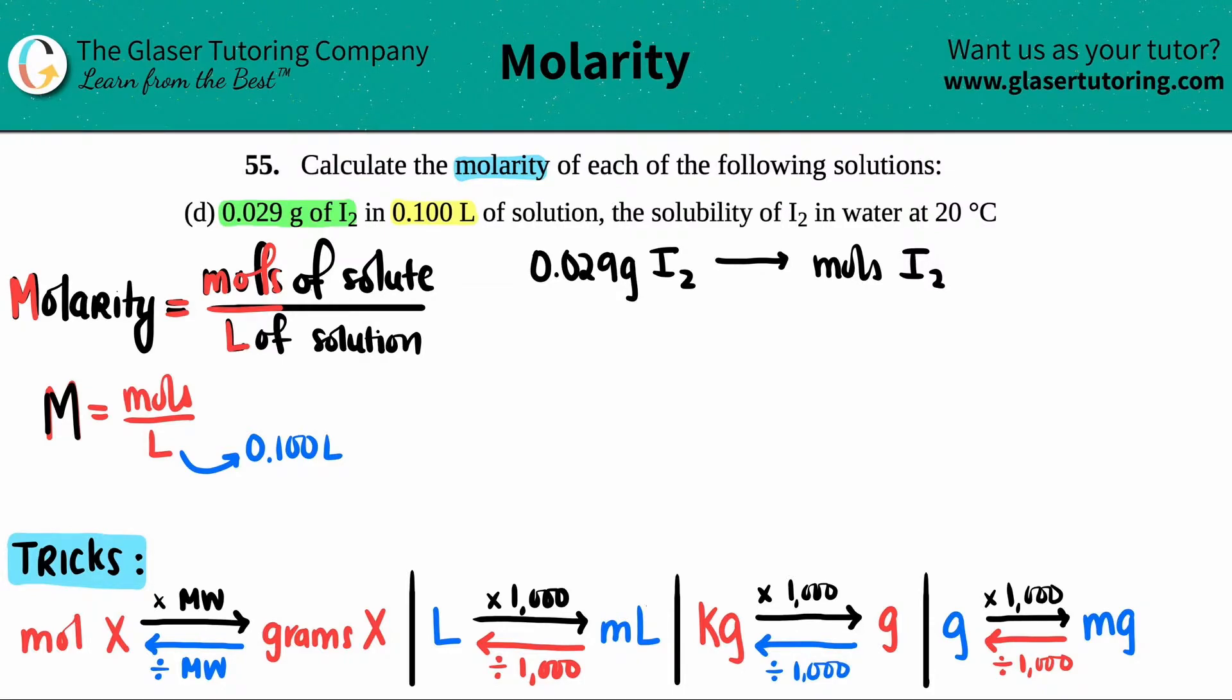Before I do this conversion, some of you might be saying, they gave us another number: 20 degrees Celsius. Where does that go? Well, 20 degrees Celsius is a temperature, and temperature isn't part of this formula. This is extra information. They just put that there to make sure you know which numbers to plug in. You don't have to do anything with this 20.